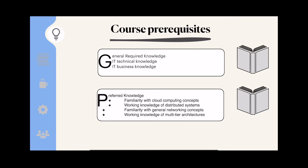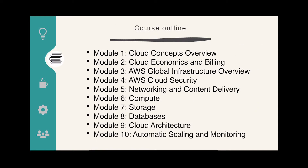The course prerequisites: we expect you to have a generic IT knowledge, both technical and business knowledge, and we prefer if you know a bit about cloud computing concepts, working knowledge of cloud computing and distributed systems, and you are familiar with general networking concepts and multi-tier architecture. But if you don't, don't worry, because in this class I'm going to help you to be certified. I have helped thousands of students get certified, and many of them are working currently in AWS and many other organizations.